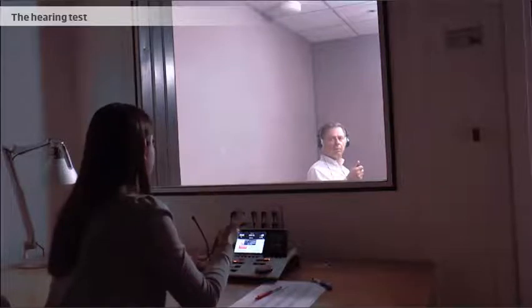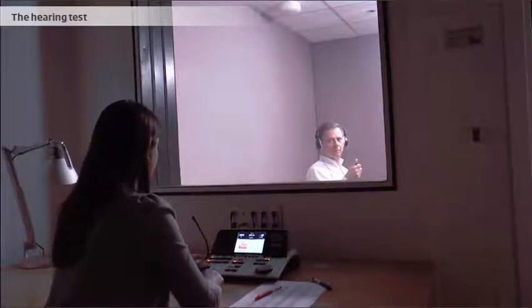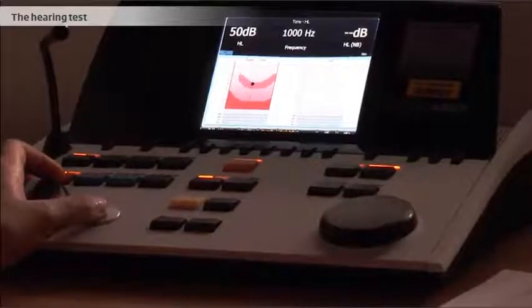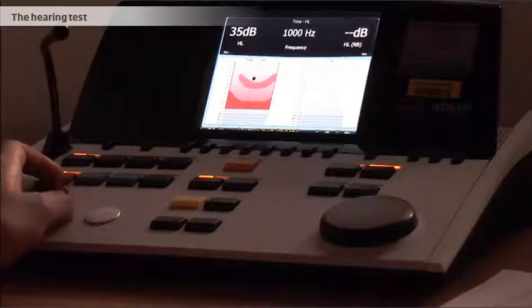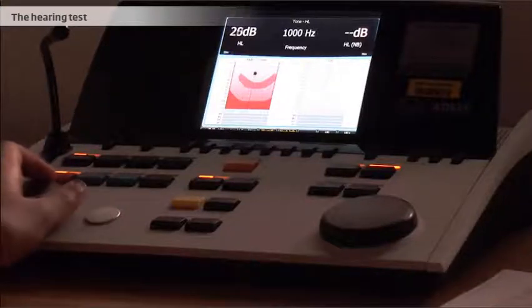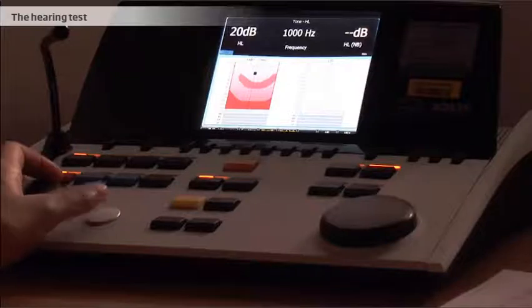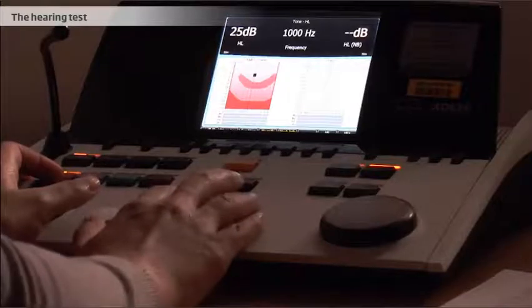It is important that the hearing care professional can see the client during the entire test. The hearing care professional will speak to the client through the headset to re-instruct the client regarding the test and to indicate that the test will begin. The hearing care professional uses an audiometer to conduct the test. The audiometer delivers tones of varying frequency and levels. The sound levels are increased and decreased following a specific procedure. The client responds by pressing the button when a sound is heard.